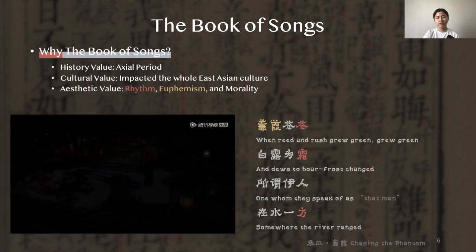Although many phenomena mentioned are antiquated to Chinese people today, many language styles and underlying patterns are almost the same as those we experience nowadays, especially the euphemistic style lying in Chinese culture. Euphemisms usually use plants and animals as metaphors to express the feelings of the authors.